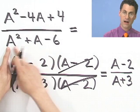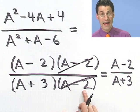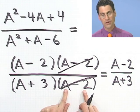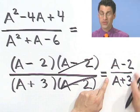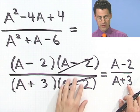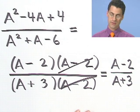But remember, the original problem, the domain was everything except minus 3 and also A can't be 2. So you have to understand that these two things aren't equal if A is 2. Even though this is defined, I broke a rule by dividing by 0. So you have to understand this is only OK if A doesn't equal 2.